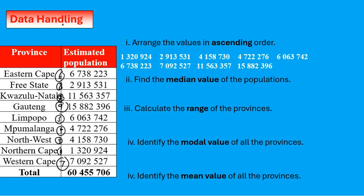Next question: find the median value. The median is the middle value — median rhymes with middle. If we look at the arranged list, the median is the value in the middle. You have four values on the left and four values on the right. If the median is one number, we circle it.